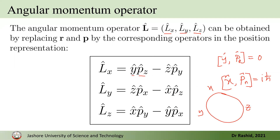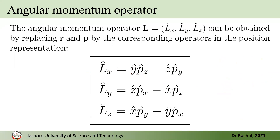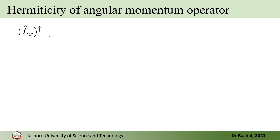Now let's check whether these operators are Hermitian or not. Whenever we have operators in quantum mechanics, we first check whether they are Hermitian, then check commutation relations. We know that all operators corresponding to physically observable quantities are Hermitian. Since the angular momentum operator is physically observable, we expect Lx to be Hermitian — but let's verify.